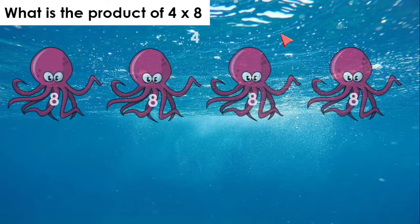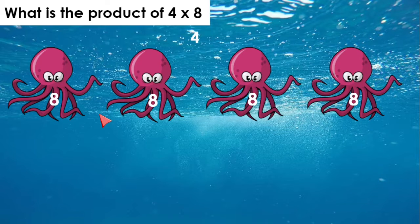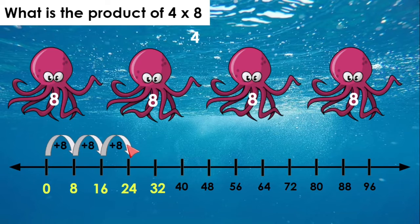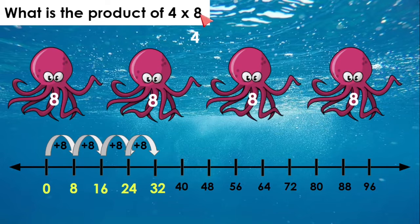4 times 8. We have 4 octopus with 8 legs each. Let's skip count or use a number line to figure out the product. So far, we are at 24. If we add 8 more to 24, we get 32. So 4 times 8 equals 32.